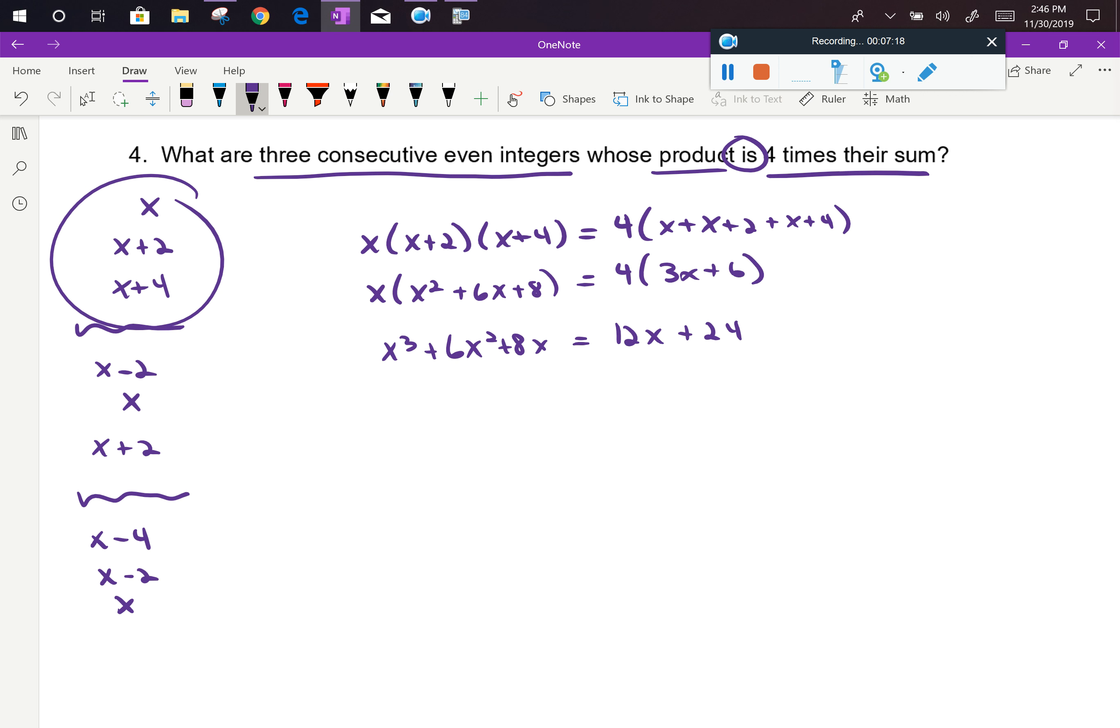I now need all the x's on one side, so I've got x³ + 6x². When I subtract 12x, I'm gonna get a negative 4x, and then I'm gonna subtract that 24 equals to zero.